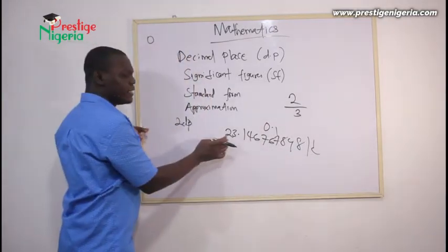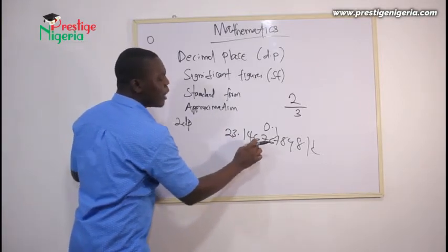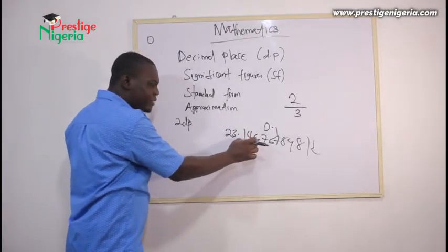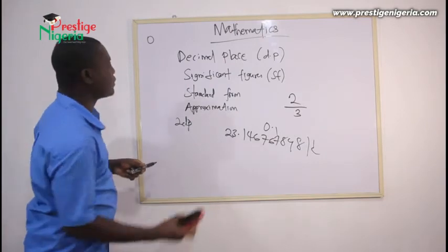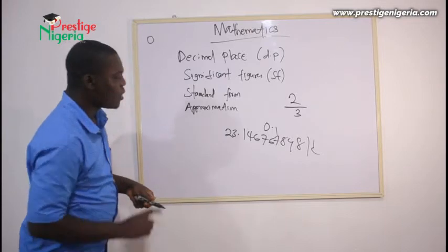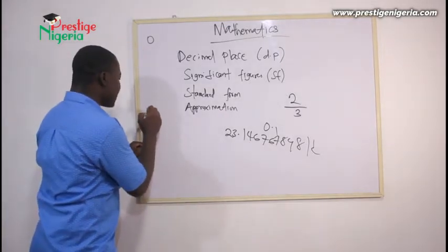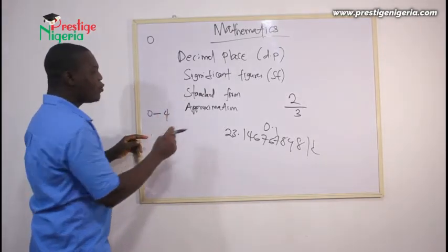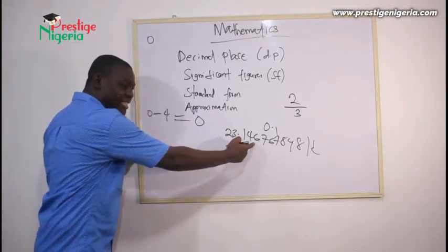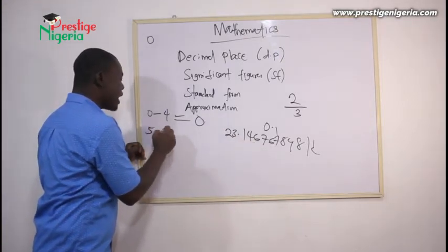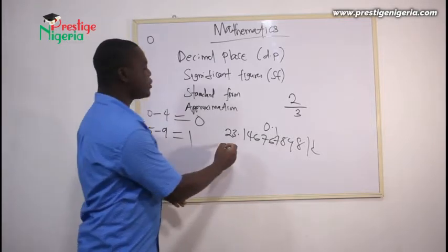Now, here is what you do. If you want to express a number in two or three decimal places, you count the required digits after the decimal point and approximate the remaining ones. The rule is: if the next digit after where you stop is between 0 and 4, you approximate to zero. If it is between 5 and 9, you approximate to one — meaning you add one to the last digit you are keeping.